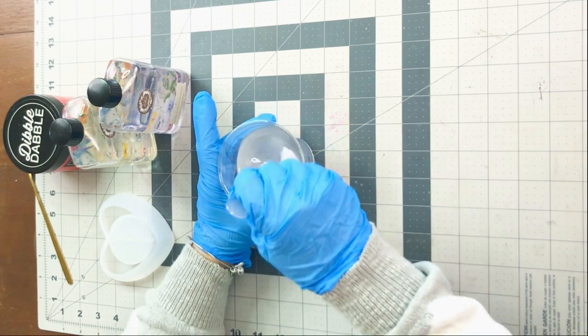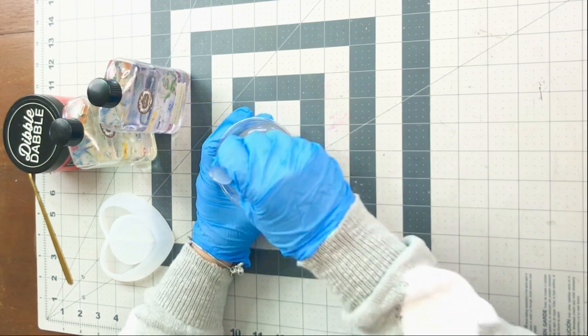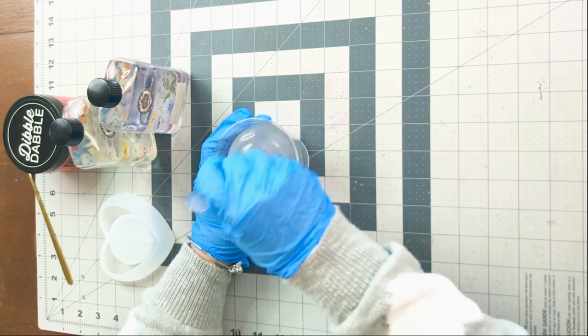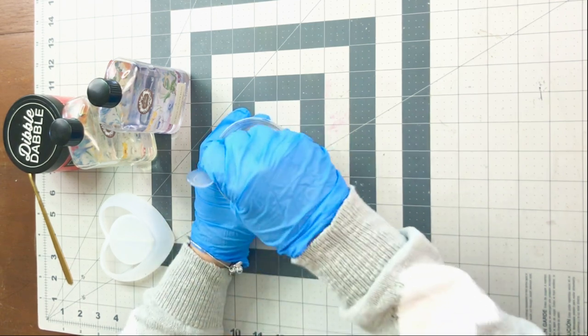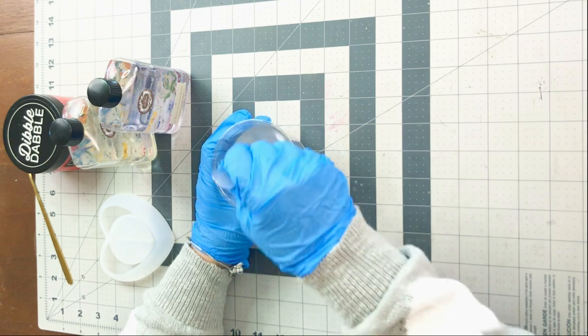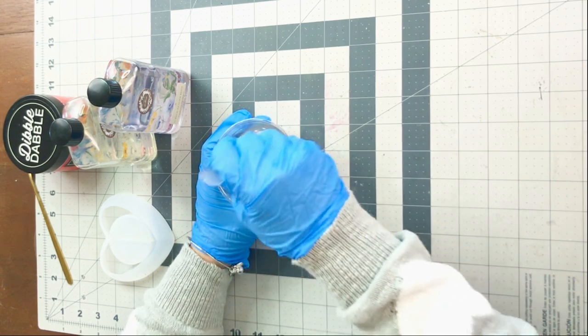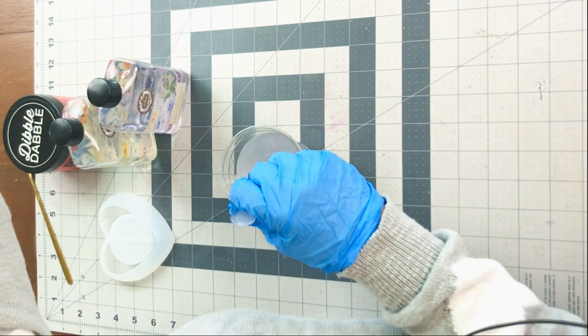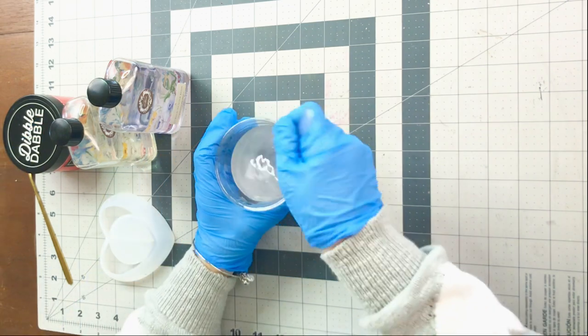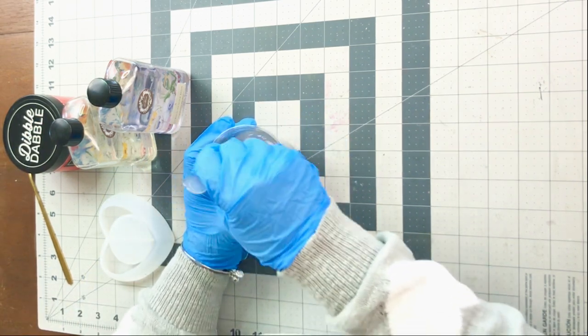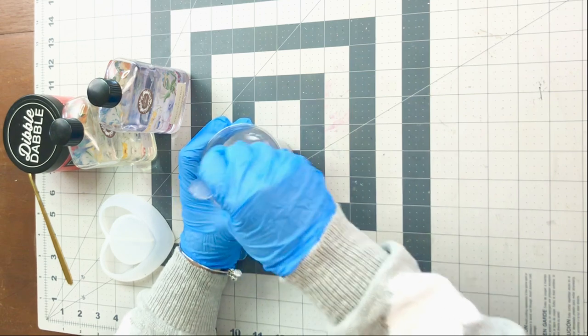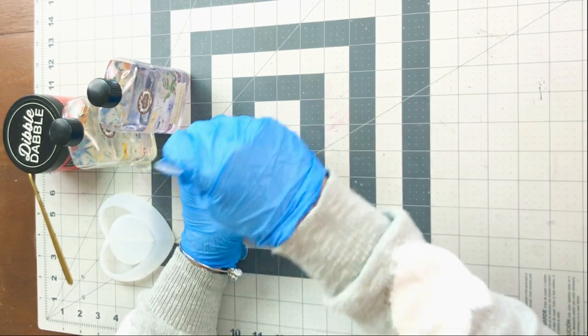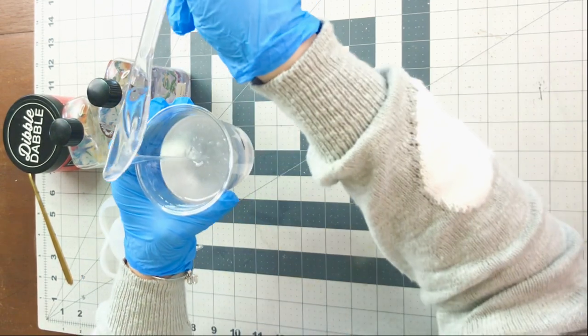And then I'm going to stir this. I was a little bit too vigorous here with the stirring. It caused a lot of bubbles, which you don't want in a resin project. So just be cognizant of that and just stir it as much as it needs to actually mix the two parts together. You don't have to go bananas like I did here with the stirring.